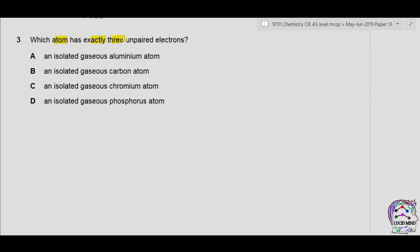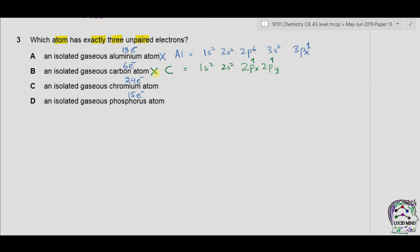Question 3: which atom has exactly 3 unpaired electrons? For isolated gaseous aluminium (atomic number 13): 1s2, 2s2, 2p6, 3s2, 3p1 — just 1 unpaired electron, so A is incorrect. For carbon (atomic number 6): 1s2, 2s2, 2px1, 2py1 — giving 2 unpaired electrons. We need 3 unpaired electrons, so carbon is also incorrect.